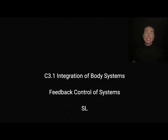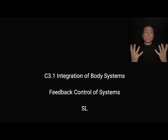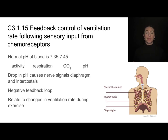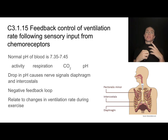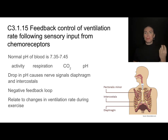In this video we'll talk about the standard level content from C3.1 on integration of body systems and we'll be looking at how all these systems are controlled by feedback loops. When we say feedback loops, what we mean are a series of inputs and responses. Let's take a look at our blood pH as an example of that.